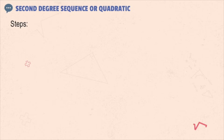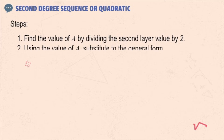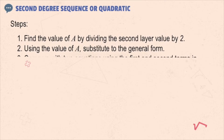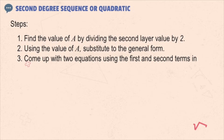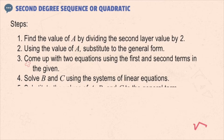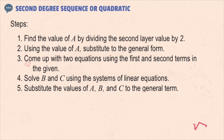Here are the steps in finding the general term of a second degree or quadratic sequence. First, find the value of a by dividing the second-layer value by 2. Second, using the value of a from step 1, substitute it into the general form to come up with your initial equation. Third, come up with two equations using the first and second terms in the given — though it's not restricted to first and second terms only; you may use the third or fourth as long as n corresponds with the order of the given term. Fourth, solve b and c using the system of equations, specifically by elimination. Fifth, substitute the values of a, b, and c to the general term to get the final answer, and check your answer.